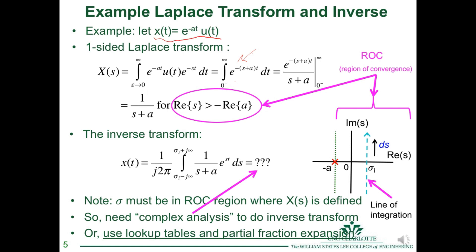For a quick example of a one-sided Laplace transform, let's choose x(t) = e to the minus at times u(t). That's the form of an impulse response of an RC filter. At t equals zero the value is one, and it decays exponentially. Multiplying by u(t) cuts off the left side — the time before zero — so this is a causal signal with no response before t equals zero: a causal impulse response of an RC-type filter.